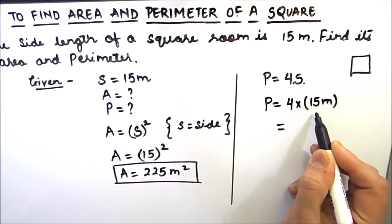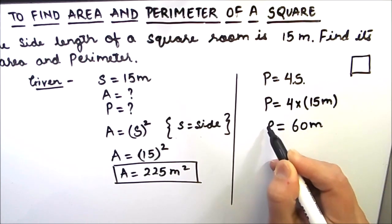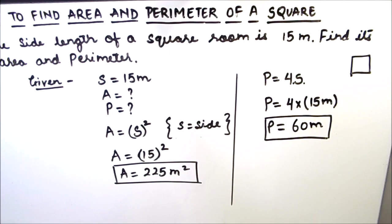4 times 15 is 60. So 60 meter is the perimeter of the square. This is how by using the formula for area and perimeter, you can easily find the area and perimeter of a square.